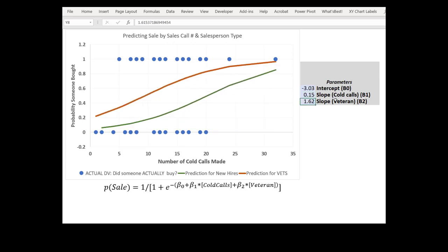Now let's take a look at the effect of being a veteran. Right now it's large and positive, and veteran is the code of one, new person's code of zero. So when we plug in a one here down in the equation we multiply that by the 1.62, and since it's positive clearly we see that veterans are more effective at closing sales than new hires are.